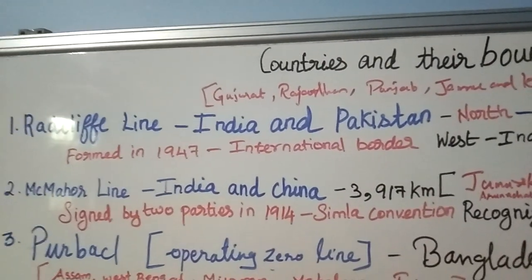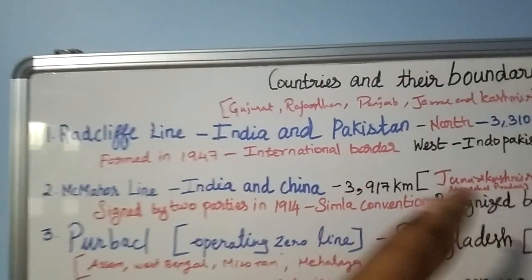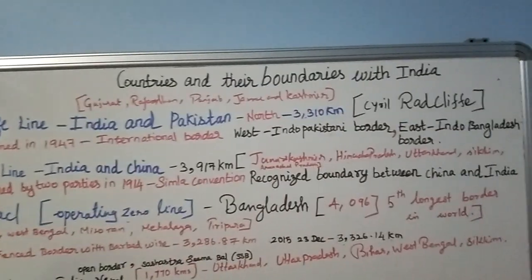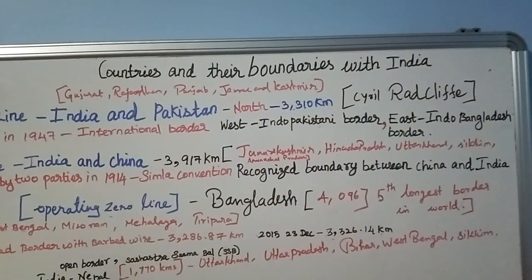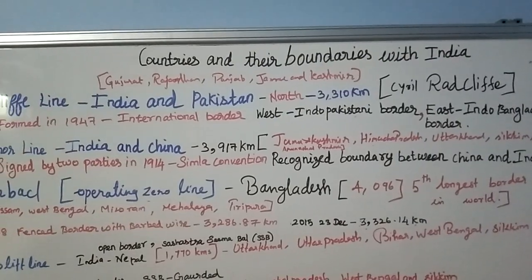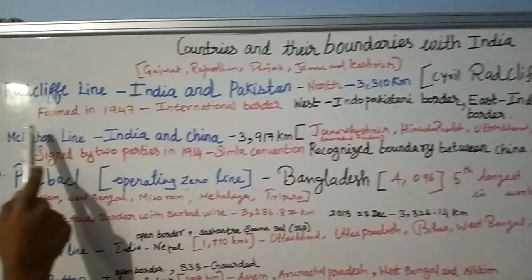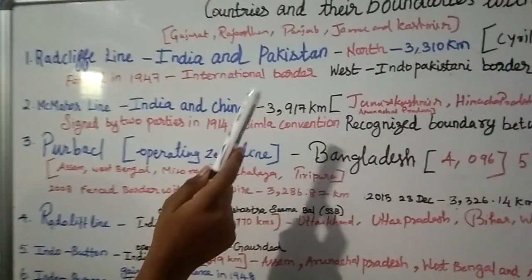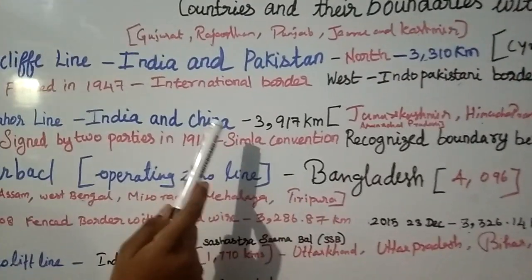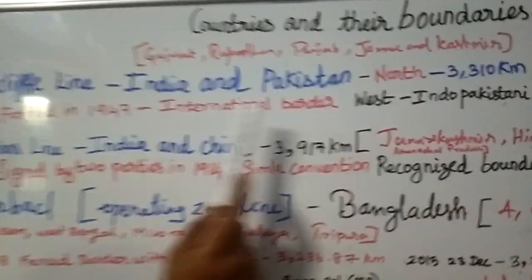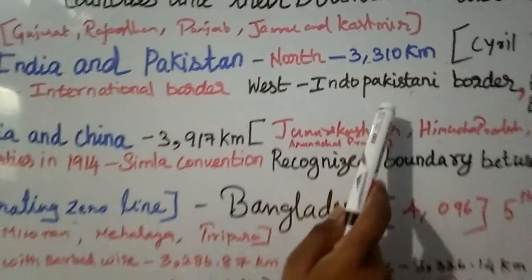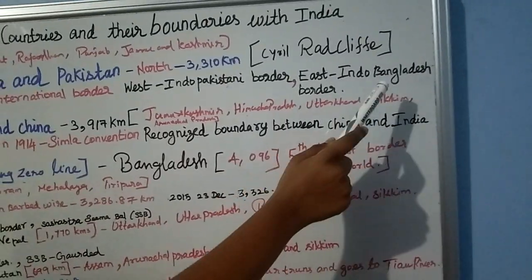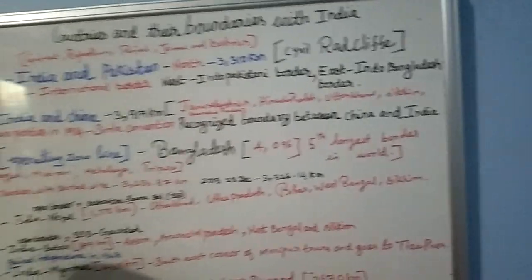Cyril Radcliffe was a lawyer. The Radcliffe Line was formed in 1947 as the international border between India and Pakistan. On the west side, that is the Indo-Pakistani border, and on the east side, that is the Indo-Bangladesh border.